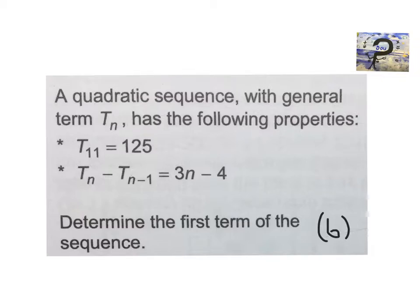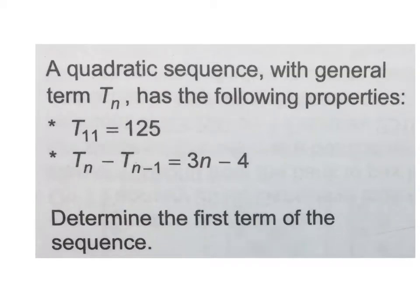It says a quadratic sequence with a general term Tn has the following properties: term 11 is 125, and Tn minus Tn minus 1 is 3n minus 4. Determine the first term of the sequence.